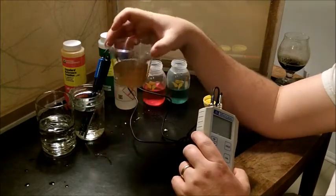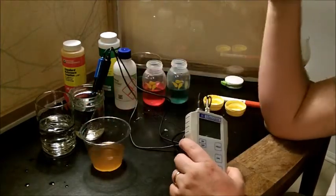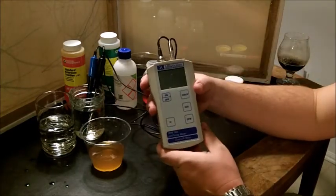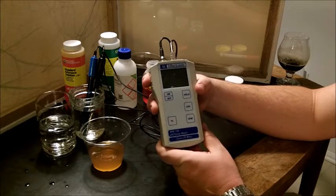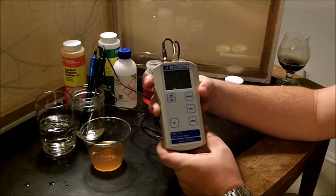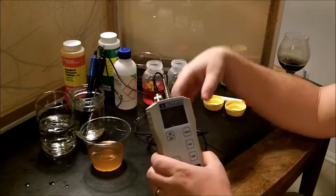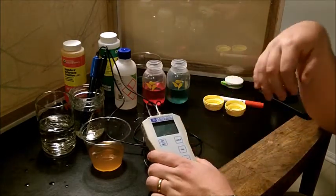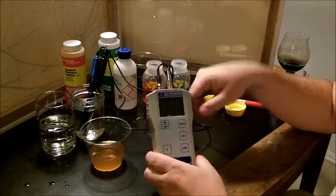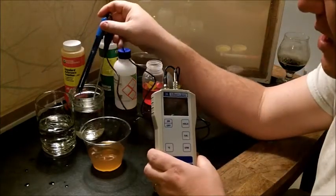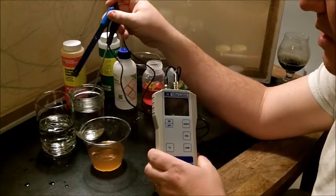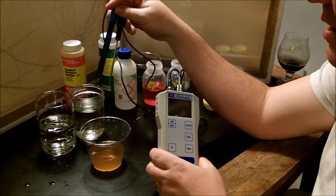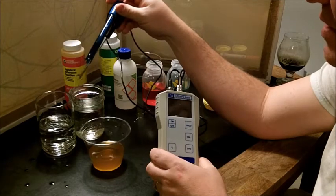This is the meter that I have. It's a pH meter by Milwaukee, model 102. It's a pretty good mid-level to advanced homebrewing meter. It has a thermometer, which is this black skinny one, and then the measuring probe.